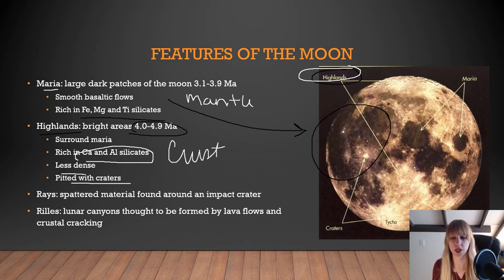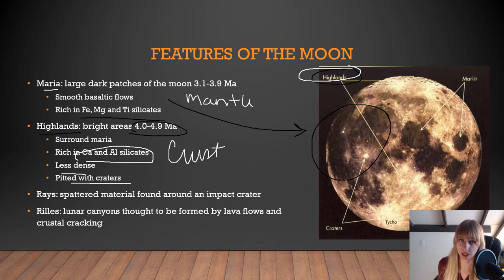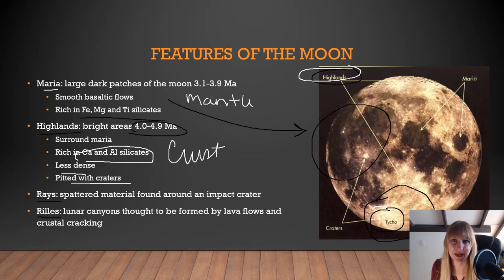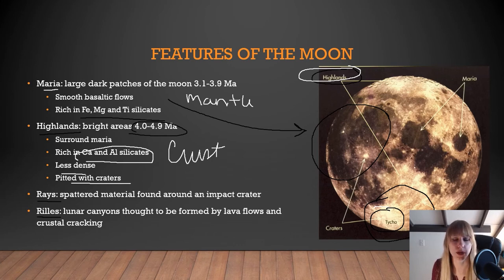We also see things called rays — visible from Earth, they are actually spattered material found around an impact crater, looking like sun rays. For example, Tycho is a crater in the highlands with many rays of sprayed material. Rills are lunar canyons — some are straight and due to crustal cracking as the moon cooled and shrank; others weave from craters, indicating they are actually lava flows.